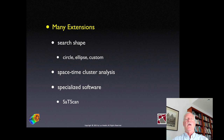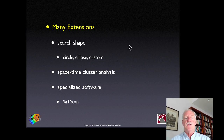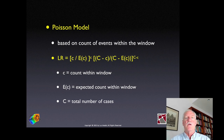While the initial discussion centers on a circle with increasing radius, there are many extensions: different shapes like ellipses or custom shapes, and extension to space-time cluster analysis. This course limits itself to the cross-sectional case. There is also a specialized software package — SATscan — devoted to all these many different special cases.